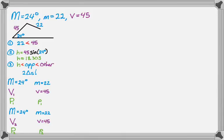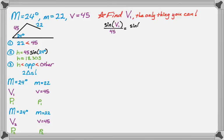And let's solve. So there's really only one thing I can do, and that's to find angle V sub 1. It's the only thing I could do. So I'm going to do that by using the law of sines. So the law of sines says that sine of V1 over 45 is the same as the sine of 24 over 22.